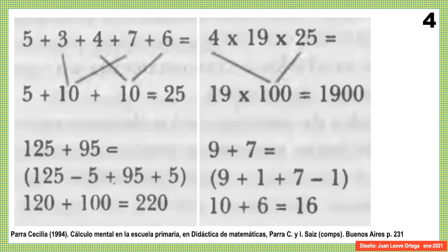En el ejemplo de abajo: 9 más 7 es lo que llamamos también el complemento de 10. Busco llegar a 10: a 9 le falta 1 para 10, se lo quito al 7 y ahora ya tendría 10, y en vez de 7 tendría 6, y la respuesta es 16. Estas estrategias no hay que enseñarlas, hay que propiciar que los niños las descubran, que los niños las compartan, que los niños platiquen con otros niños para ver cómo resolvieron ellos mismos la misma situación de cálculo mental.